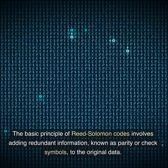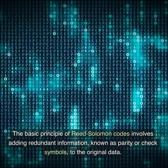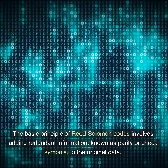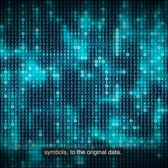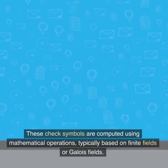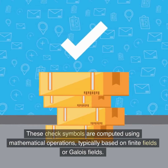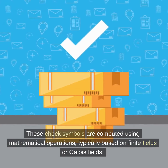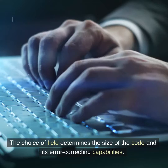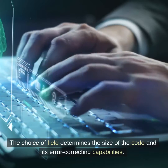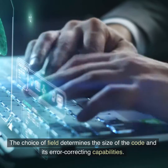The basic principle of Reed-Solomon codes involves adding redundant information, known as parity or check symbols, to the original data. These check symbols are computed using mathematical operations, typically based on finite fields or Galois fields. The choice of field determines the size of the code and its error-correcting capabilities.